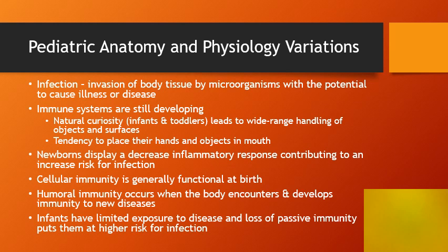They have a tendency to place their hands and objects into their mouths. Newborns display a decreased inflammatory response that contributes to an increased risk for infection. Cellular immunity is generally functional at birth. Humoral immunity occurs when the body encounters and develops immunity to a new disease; because infants have limited exposure to diseases and lose passive immunity from mom after birth, this puts them at higher risk for infection.